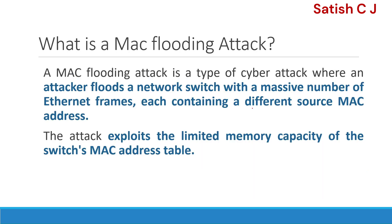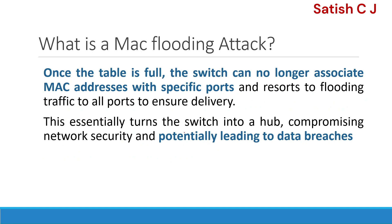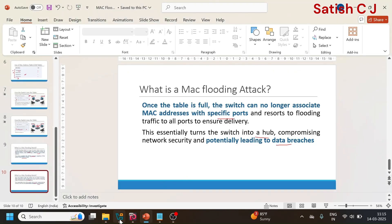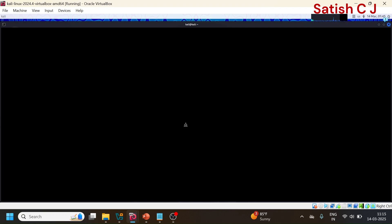In a MAC flooding attack, the attacker floods a network switch with a massive number of Ethernet frames each containing a different source MAC address. Since the CAM table has limited memory, it gets overwhelmed. The switch can no longer associate MAC addresses with specific ports — it turns into a hub and broadcasts all packets to all systems, leading to potential data breaches. We'll now look at a command used for MAC flooding.